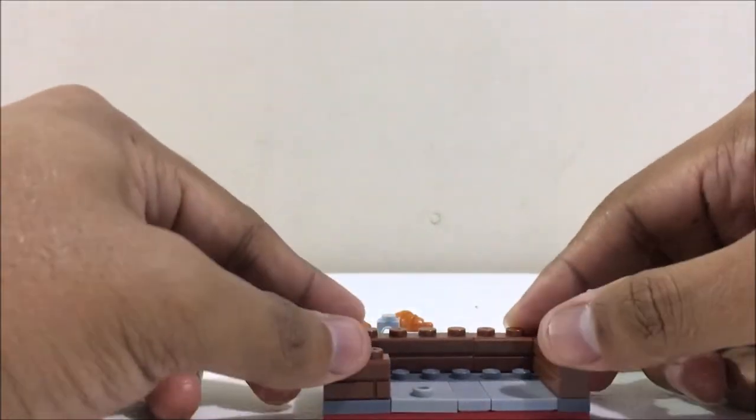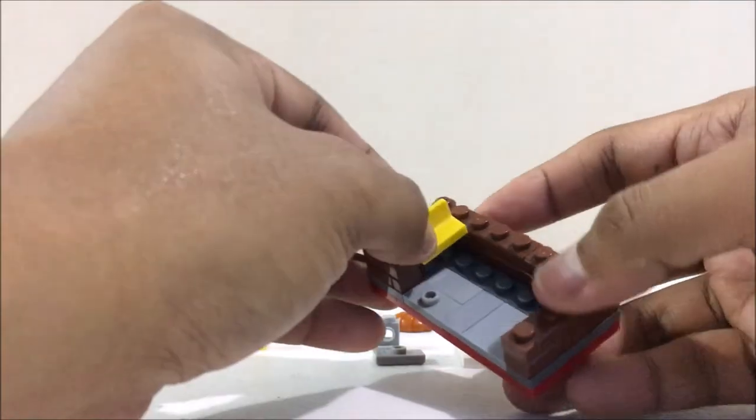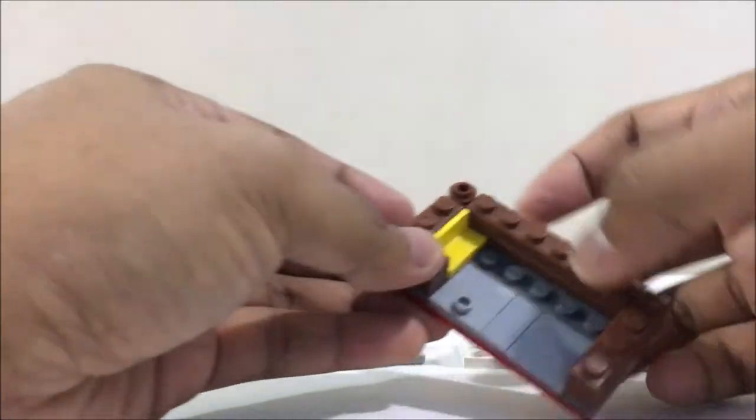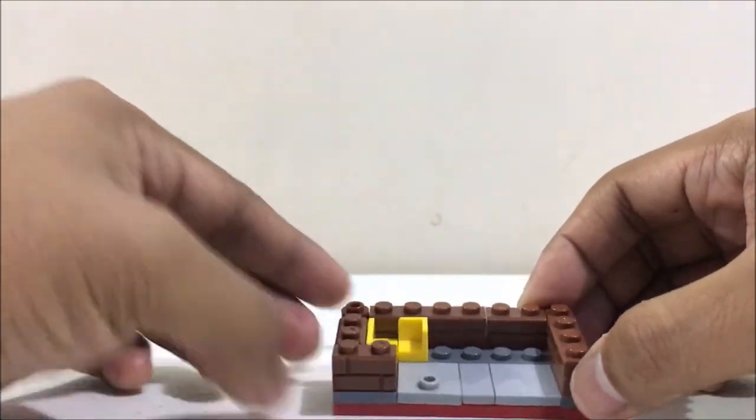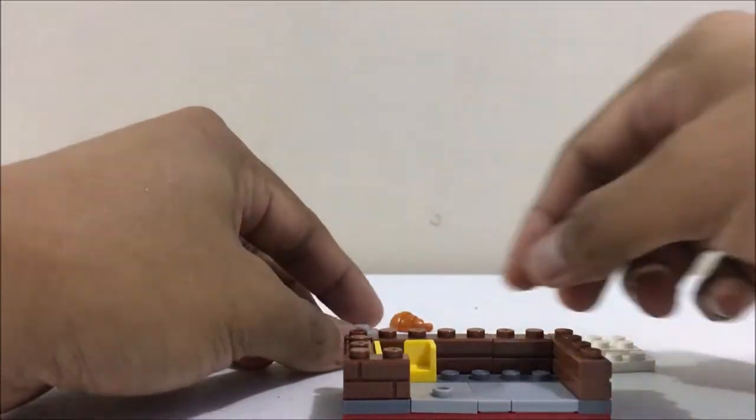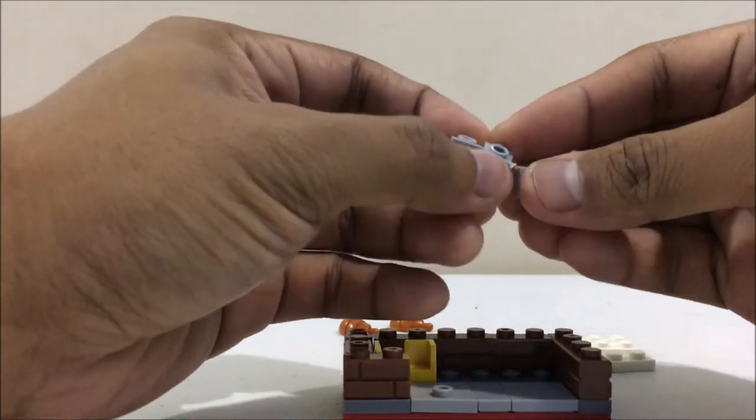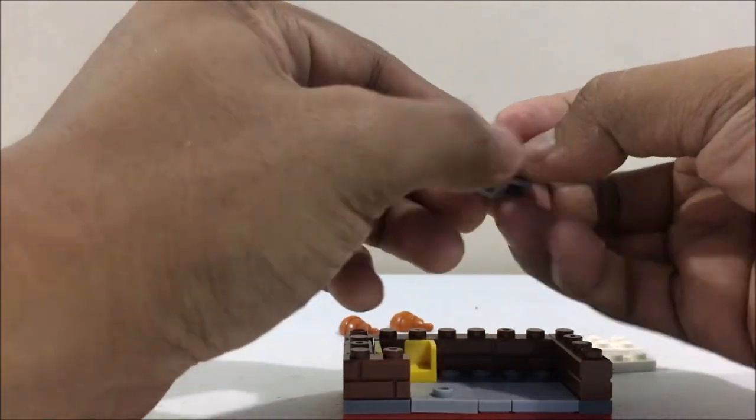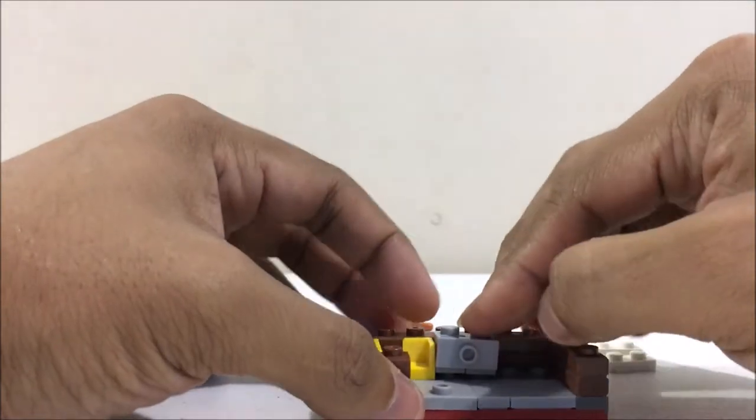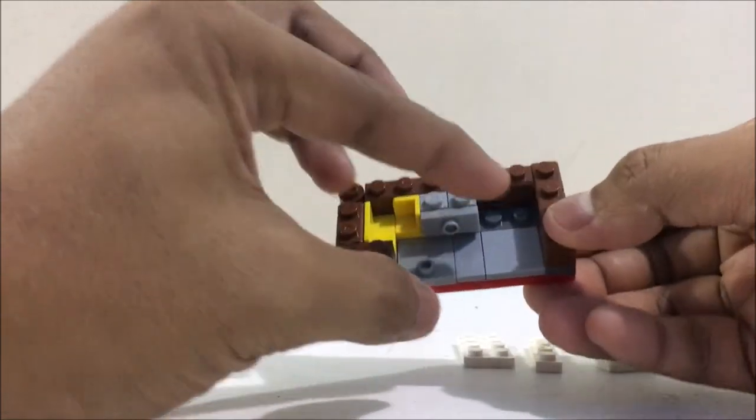Now let's build the cabinet. Put this panel piece here and this corner piece here. For this cabinet drawer, just place this 1x2 tile on the side studs and place it there. This space will be for the oven.